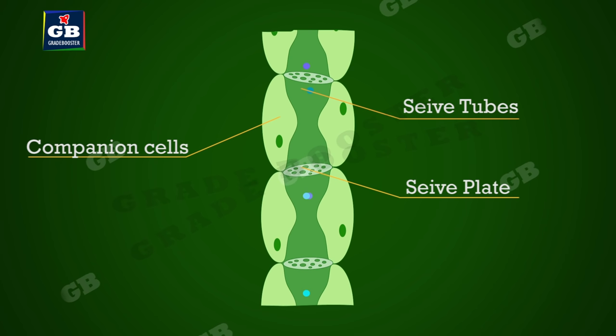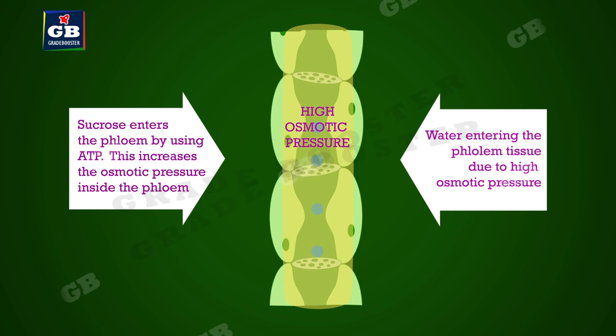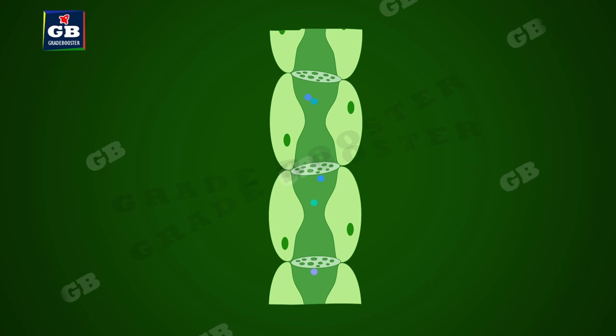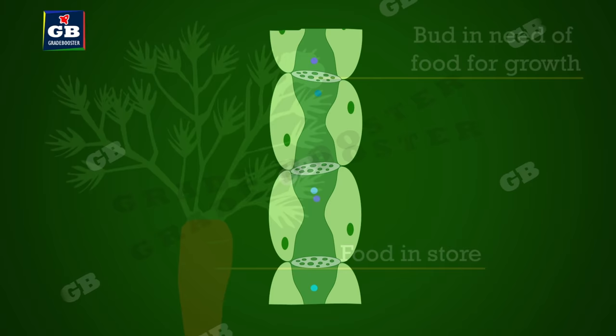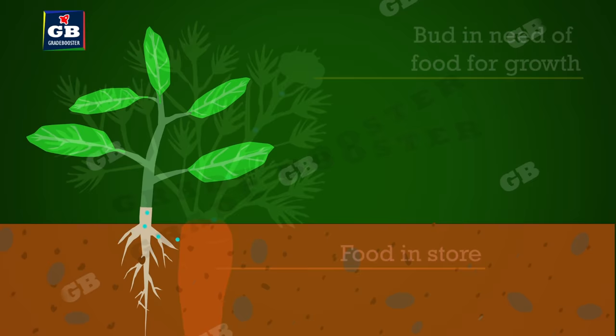Translocation in phloem is achieved by utilizing energy. Materials like sucrose are transferred in phloem tissue using energy from ATP. This increases the osmotic pressure of the tissue, causing water to move into it. This pressure moves the material in the phloem to tissues which have less pressure, allowing the phloem to move material according to the plant's needs. For example, in the spring, sugar stored in root or stem tissue would be transported to the buds, which need energy to grow.